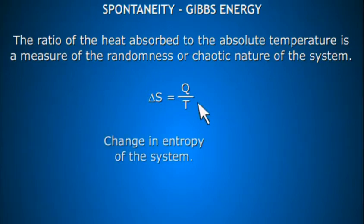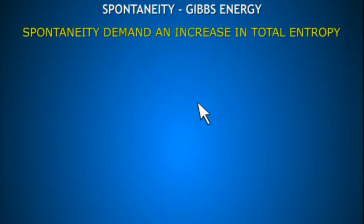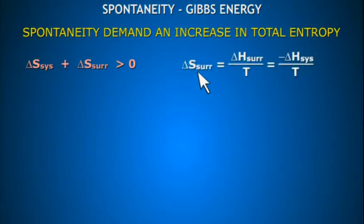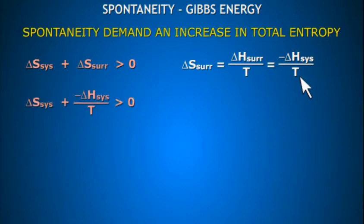This actually affects the change in entropy of the system. Spontaneity demands an increase in the total entropy of the system, that is, ΔS(system) + ΔS(surroundings) should be greater than zero. Now, ΔS(surroundings) is equal to −ΔH(system) divided by the absolute temperature. Therefore, spontaneity of a process in a closed or open system cannot be judged by ΔH(system) or by ΔS(system) alone.